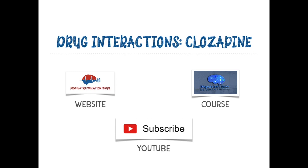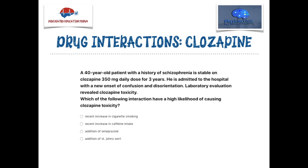Before we begin this podcast, I posted a clinical case question on our website, Psychiatry Education Forum. A 40-year-old patient with a history of schizophrenia is stable on clozapine 350 milligrams daily dose for three years. But now he is admitted to hospital for recent worsening of confusion and disorientation. When you did the lab work and checked the clozapine level, you found that he is having clozapine toxicity — which of the following interactions has the high likelihood of causing clozapine toxicity, meaning increased clozapine level to a toxic range?